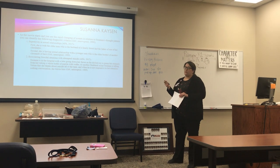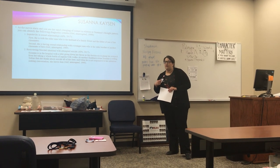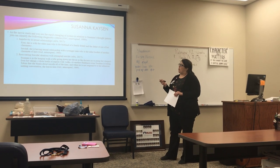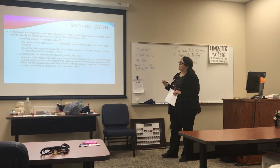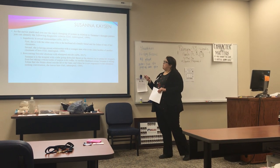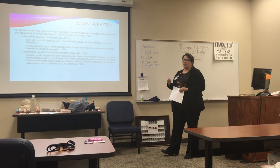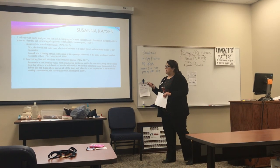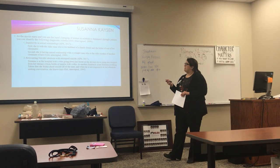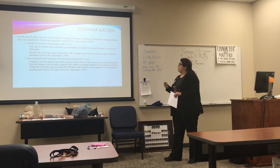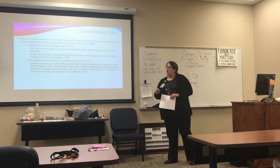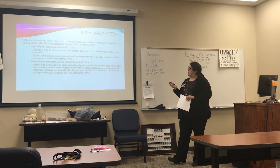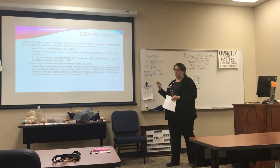These are the takes that relate to the DSM-5 based on the movie and its content. Number one: Susanna has impulsivity in sexual relationships. That is seen when she is first with the older man who is the husband of a family friend and the father of one of her classmates, Bonnie. Later in the movie, she is having a sexual relationship with a younger man who is the older brother of another classmate. Both of these show her impulsivity and her seeking of sexual gratification.